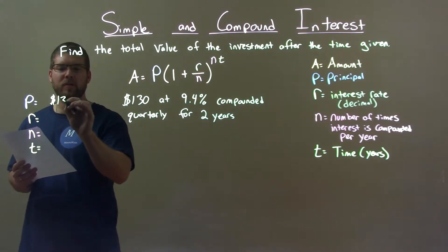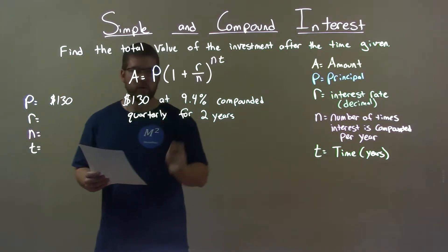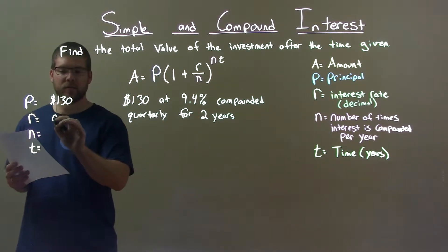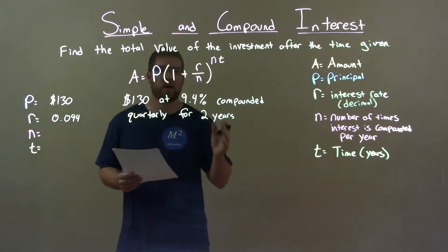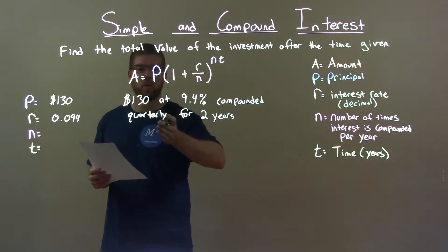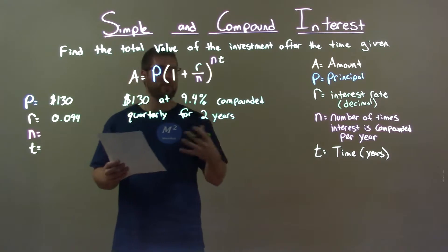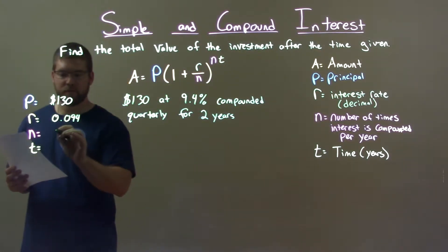Principal, initial amount, $130. Our interest rate, 9.4% as a decimal, 0.094. The number of times we compound within a year. Compounded quarterly means we compound this interest 4 times a year, quarterly being 4.